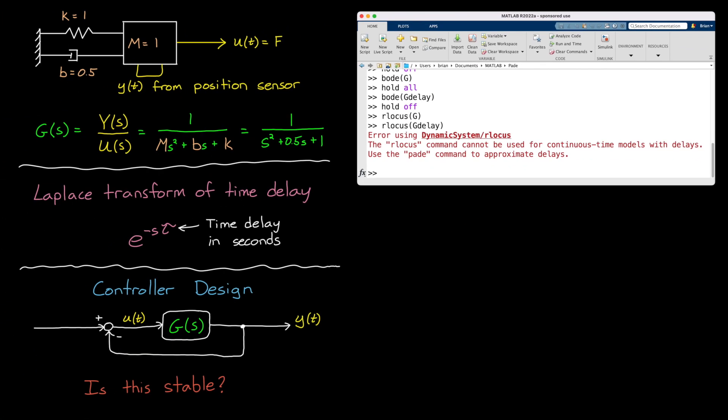But root locus isn't alone. Time delay doesn't work well for other control methods either, like LQR or H infinity synthesis. Again, it's this infinite number of states problem. If you're doing full state feedback, like LQR, then you need to feed back an infinite number of states. Or in the case of H infinity, you'd end up with an infinite state controller, and neither of which are practical solutions.